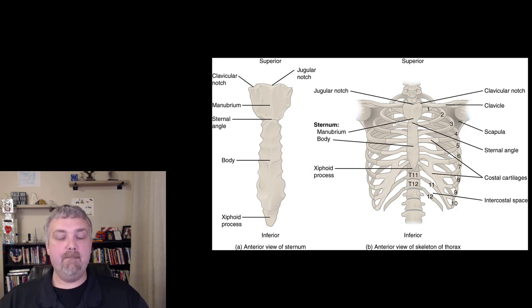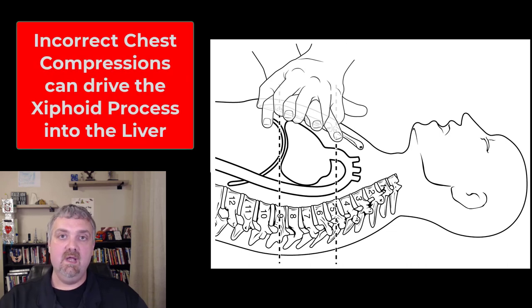The xiphoid process begins as cartilage but starts to ossify later in life during middle age. The key thing to note about the tip of the xiphoid process is to avoid it if you're doing CPR, which is why you count up from the bottom of the sternum.